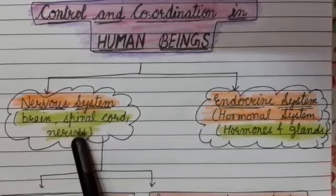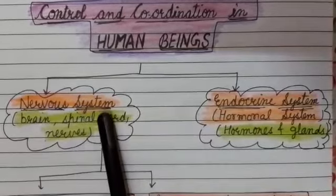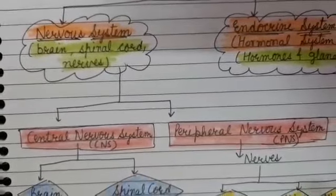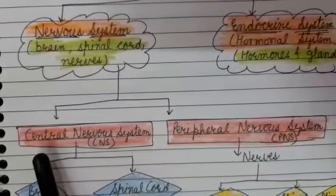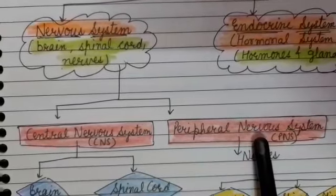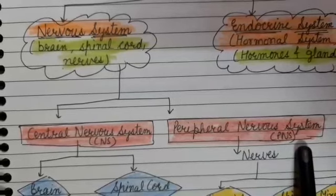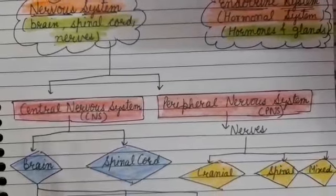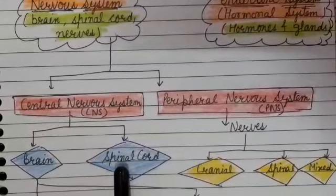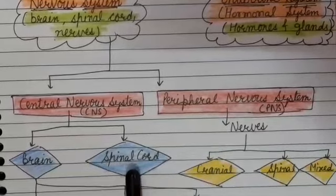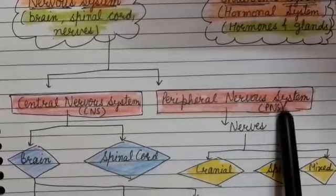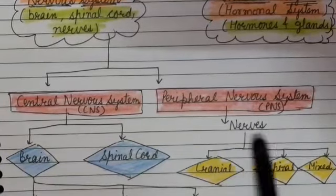Now we are starting with the Nervous System. The Nervous System has two parts: Central Nervous System (CNS) and Peripheral Nervous System (PNS). The Central Nervous System is further divided into two parts — Brain and Spinal Cord. The Peripheral Nervous System is made up of Nerves.